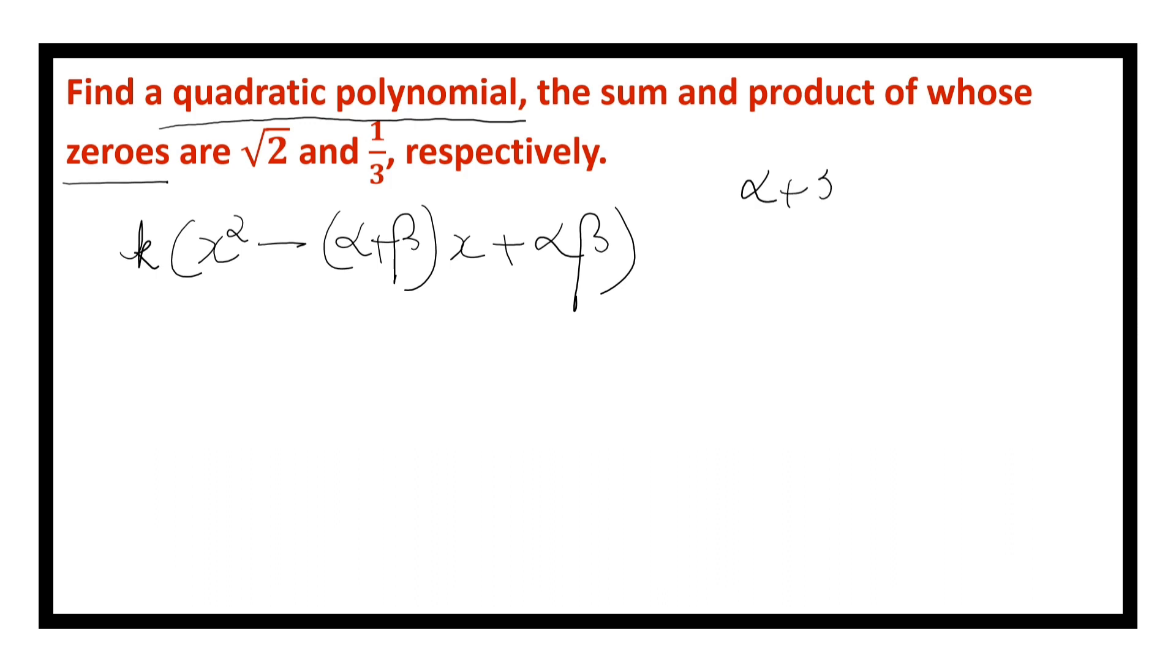Alpha plus beta is square root of 2. Product of zeros is 1 by 3.